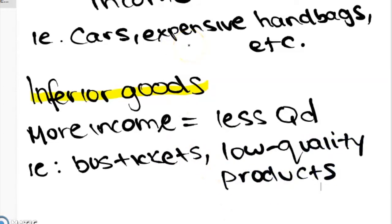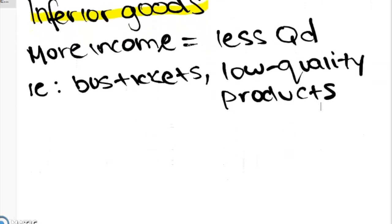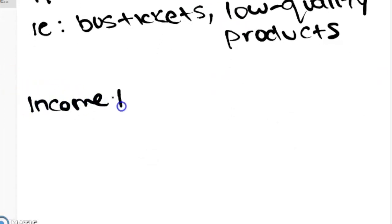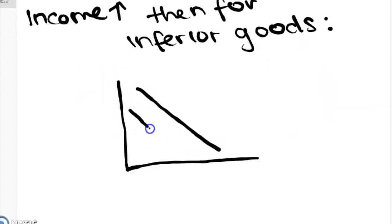When there's an increase in income for normal goods, the demand for normal goods will shift to the right. But when there's an increase in income, the demand for inferior goods will shift to the left.